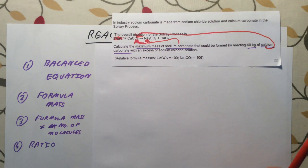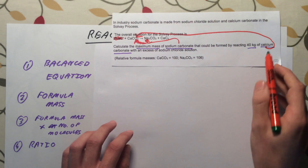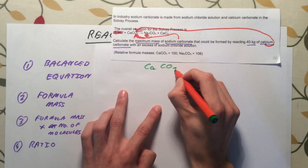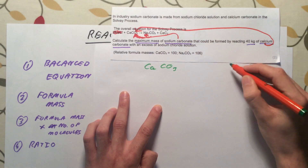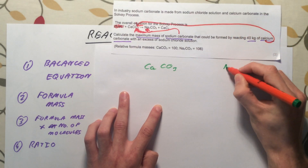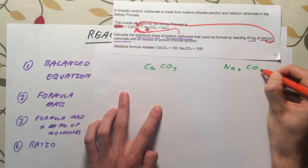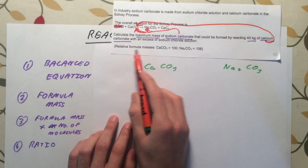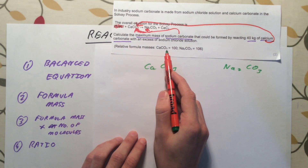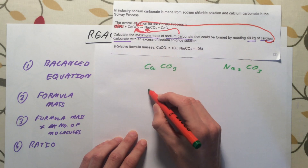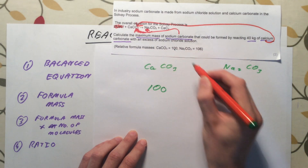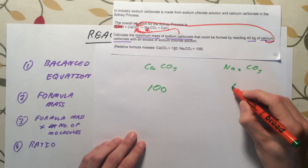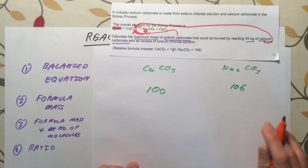All I'm interested in then is calcium carbonate, CaCO₃, and sodium carbonate, Na₂CO₃. What's really nice about this question is it has already given you the relative formula masses. Calcium carbonate CaCO₃ has a relative formula mass of 100, and it also tells you the formula mass of sodium carbonate which is 106. That saves us a lot of work.